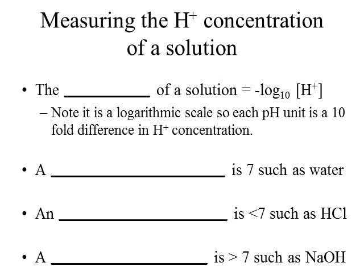How do we measure the hydrogen ion concentration of a solution? We do this using a function called pH. The pH of a solution is defined as the negative log base 10 of the hydrogen ion concentration. If you're not used to working with pH or logarithmic functions, this can be a little confusing at first. I'll go over some pH numbers and what they mean, and then discuss what happens with these negative log functions.